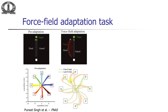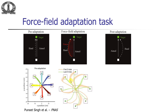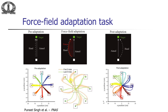After about 200 reaching tasks, we switch off the force. The hand over-compensates — it expects a force that is no longer there and deviates in the opposite direction. So the curve is in the opposite direction compared to when the force was applied. Throughout all phases we record x-y and the rotations at the four joints.